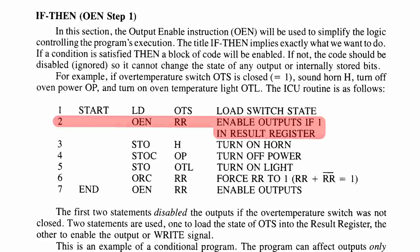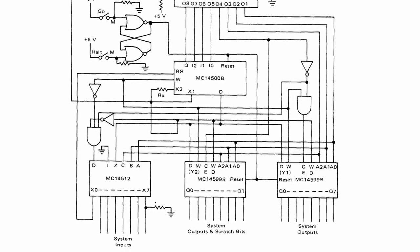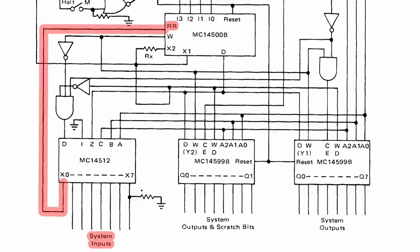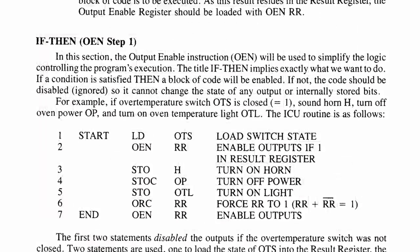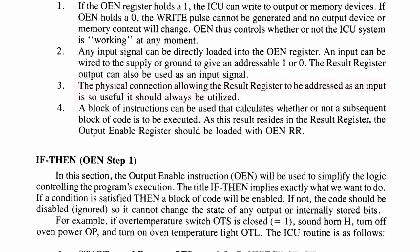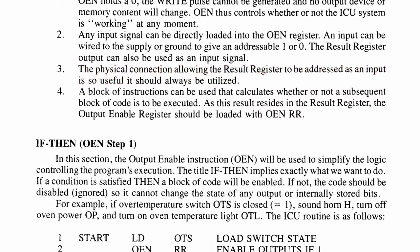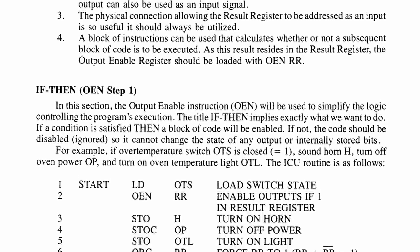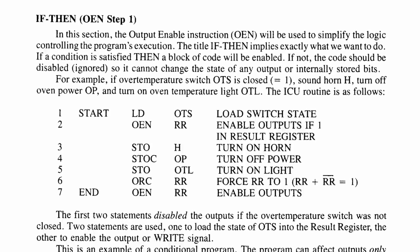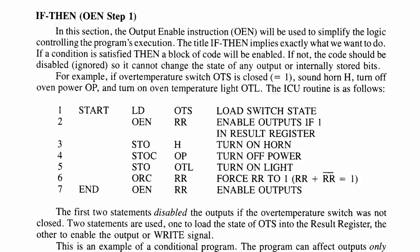This is another interesting point because the minimal ICU system is designed in such a way that the result register can be circled back around as an input. We just select the address that the result register is sitting on and that is an input onto the data bus. This is so important that they state the physical connection allowing the result register to be addressed as an input is so useful it should always be utilized. What this means is we can turn the output enable register on or off based on the value stored in the result register.